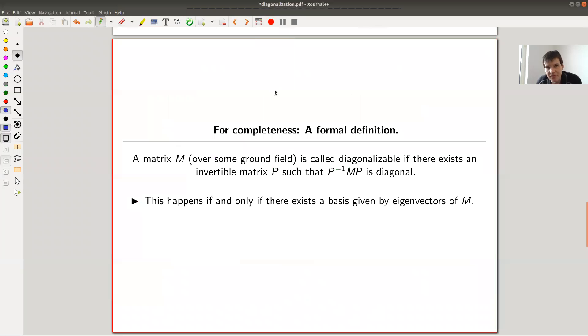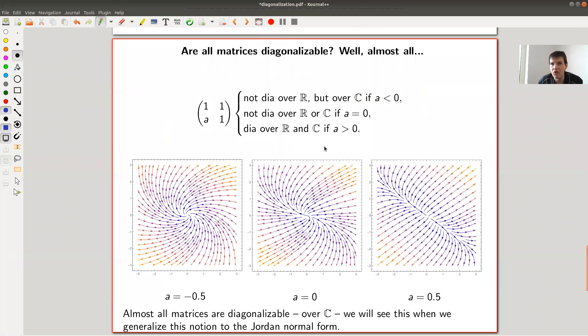So not all matrices are actually diagonalizable. The formal definition is exactly what you think it is: a matrix over some field - I just showed you the real numbers, that's good enough - a matrix over some field is diagonalizable if there exists some invertible matrix such that P^{-1}MP is diagonal. This happens if and only if there exists a basis given by the eigenvectors. The natural question you should ask is: are all matrices diagonalizable?